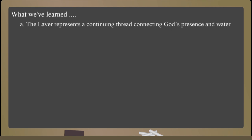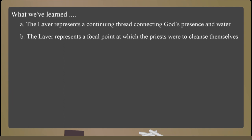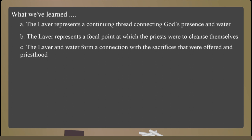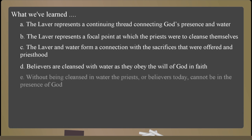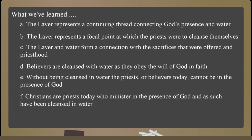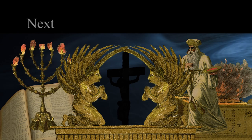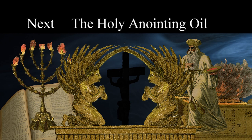The laver physically represents the single point at which the priests were cleansed and made ready to continue their tasks in the presence of God. Today the scriptures contain the commands that lead us to obey the will of the Father — likewise there is a single point at which we can access the forgiveness of God in his presence. The laver represents a continuing thread connecting God's presence and water, a focal point of cleansing, and a connection with the sacrifices and priesthood. Consecration of the tabernacle and objects used in daily worship were sanctified using the holy anointing oil — join me in the next lesson as we discuss this important physical and symbolic element and its connections in the scriptures.